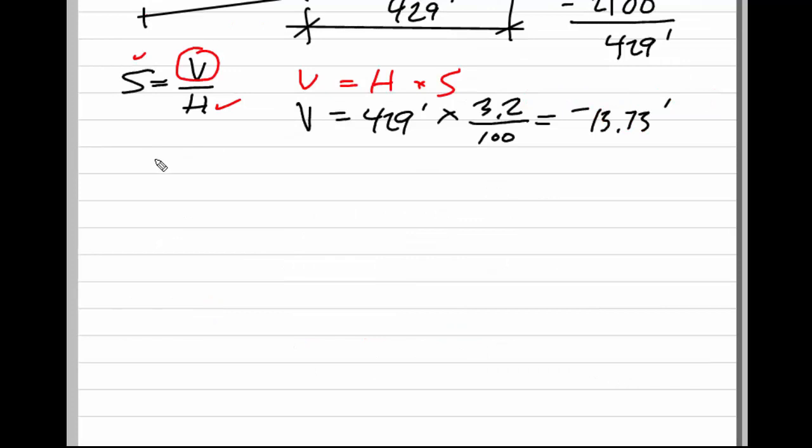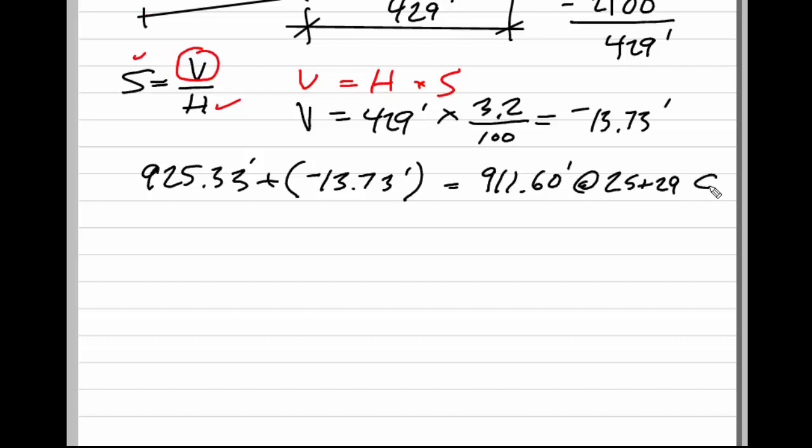My elevation at 21+00 was 925.33, and I'm going to add this negative number, so I'm getting a net subtraction. And thus the elevation on the center line is going to be 911.60 feet. And this is at 25+29 on the center line.